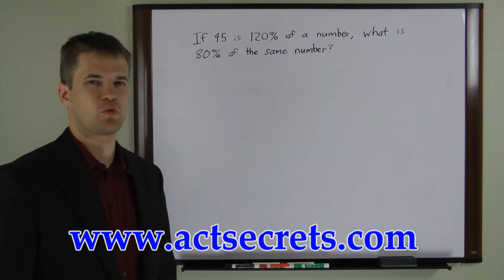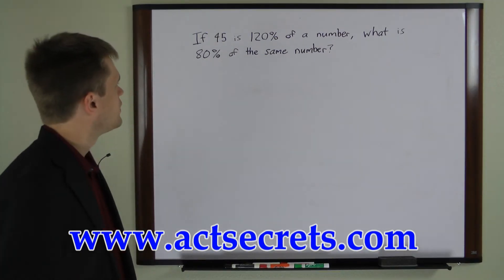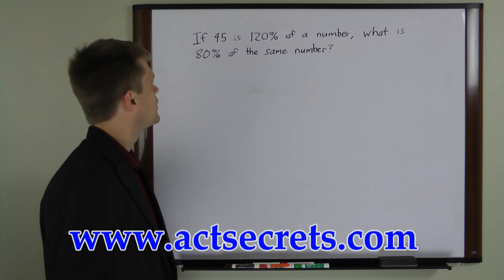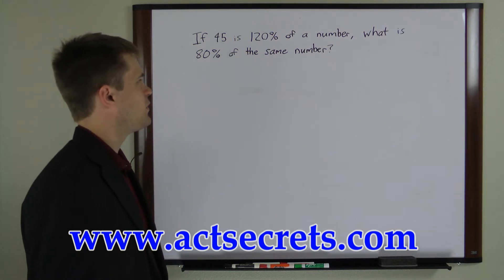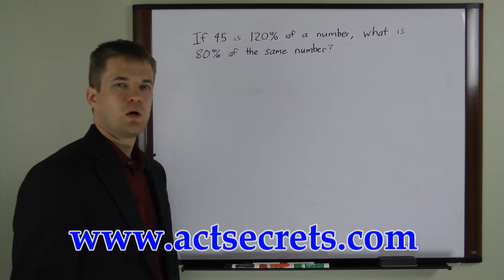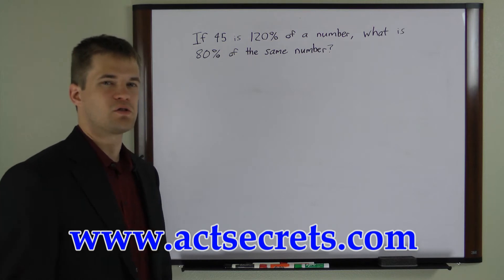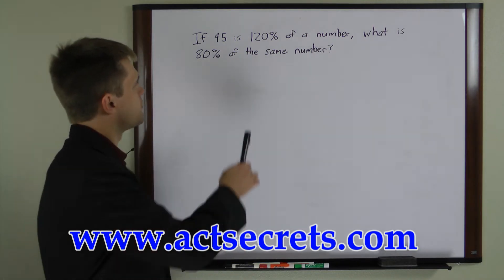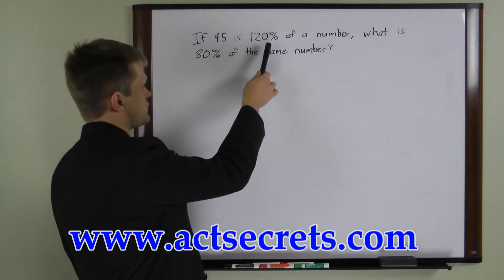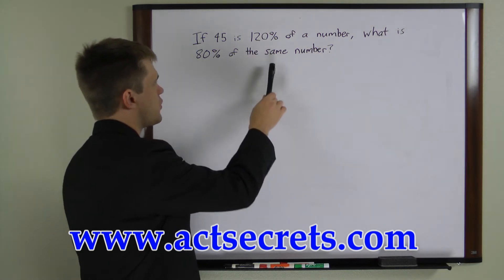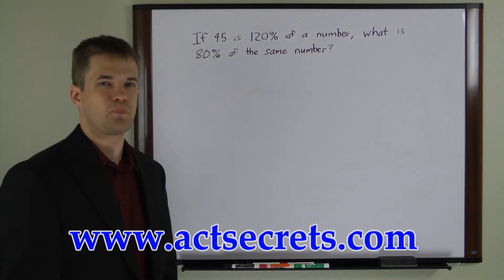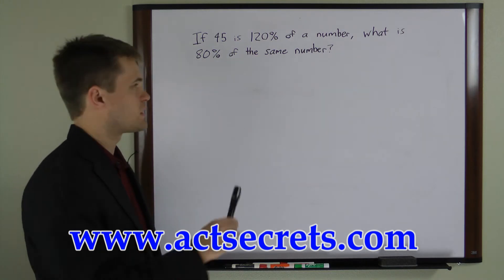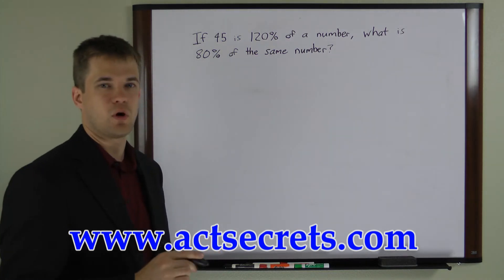Let's take a look at this problem here. If 45 is 120% of a number, what is 80% of the same number? What we have here is a two-step percentage multiplication problem. First we have to work backwards with one percent, and then we get to work forwards with the other percent. This problem gives us two equations that we can solve to find the number we're looking for.